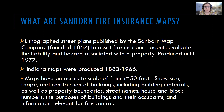So what are Sanborn fire insurance maps? Sanborn maps are lithographed street plans published by the Sanborn Map Company, which was founded in 1867. They were created with the purpose of assisting fire insurance agents evaluate the liability and potential hazards associated with a property — by looking at what materials buildings were made from, whether they had sprinkler systems, their proximity to other buildings, fire hydrants, water pipes and gas lines, and so on. The final maps were produced in 1977, when they were replaced with more modern means of making these types of evaluations.